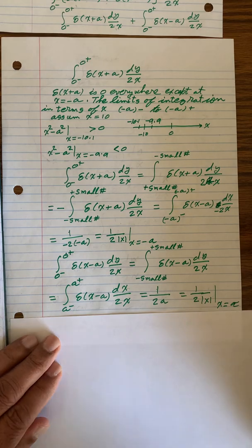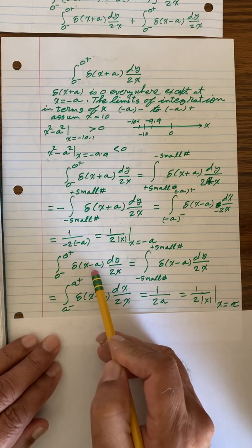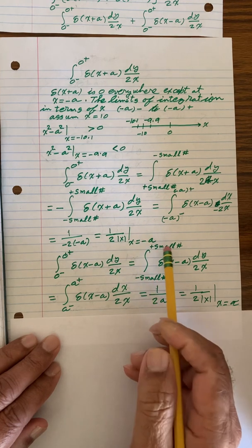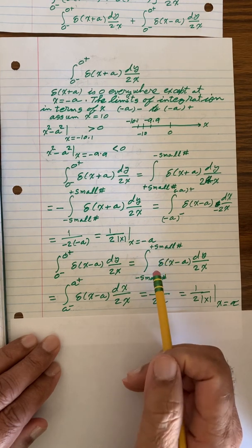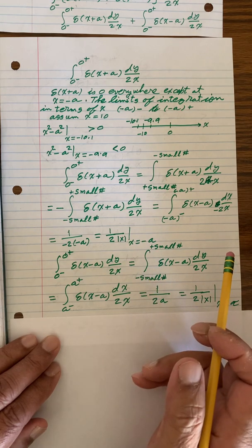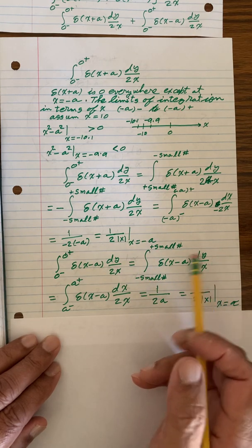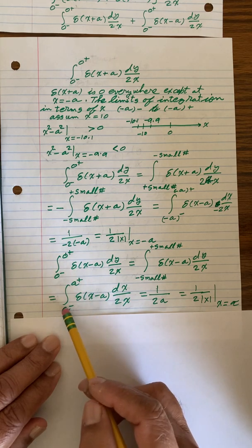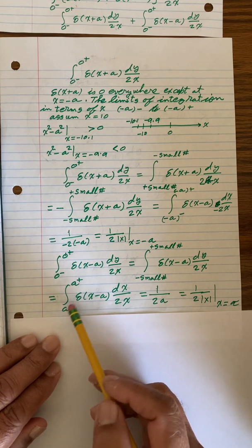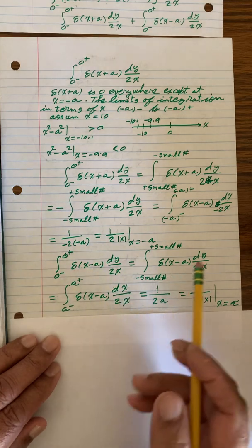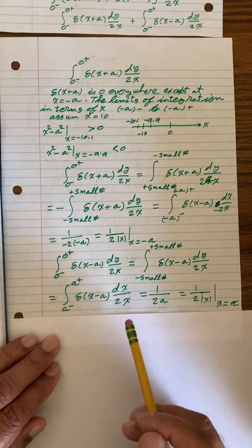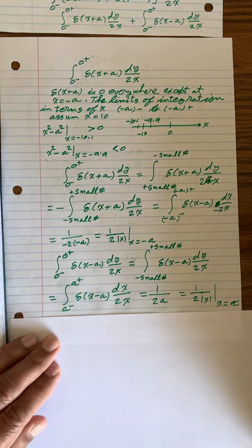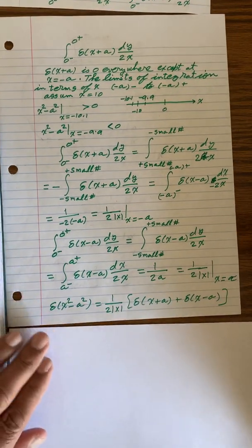Now, for x equal to minus a, it stays minus small number to plus small number limits of integration, so we don't have to change anything. And then when we change this integration limit to x, we have to change dy to dx. So this becomes 1 over 2 absolute value of x at x equal to a. So here,